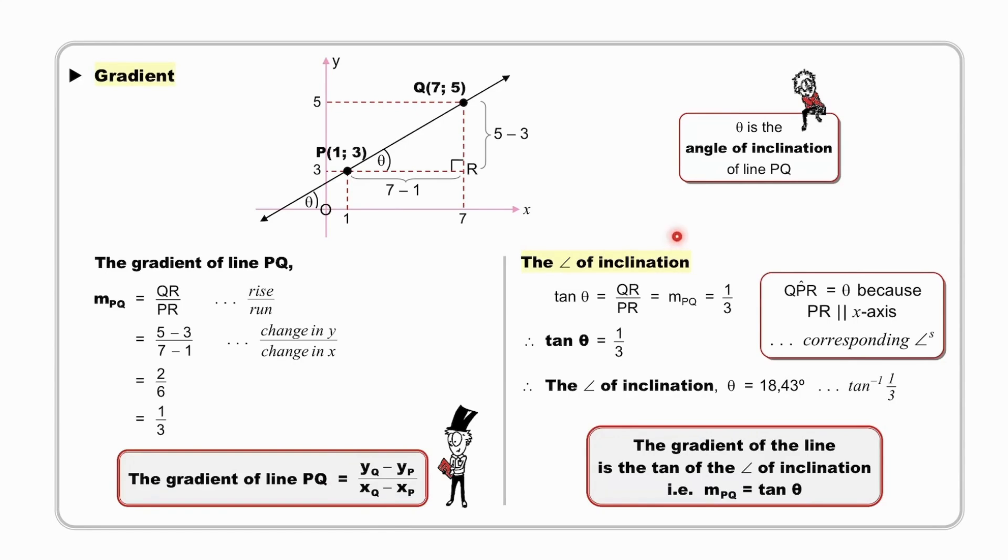And then the angle of inclination, θ. The tan of θ is (5 - 3) over (7 - 1), which is 2 over 6, which is 1/3. The tan of θ is 1/3, enables us to calculate the angle of inclination from our calculator, θ = 18.43 degrees. Remembering that the gradient of the line is the tan of the angle of inclination. From now on, use the formula now that you believe in it, but only when necessary.